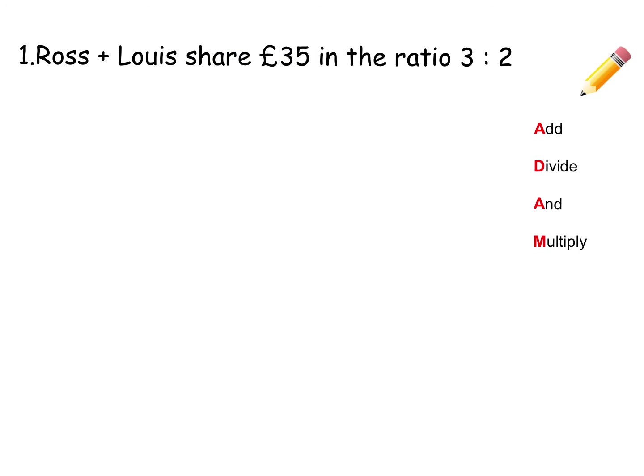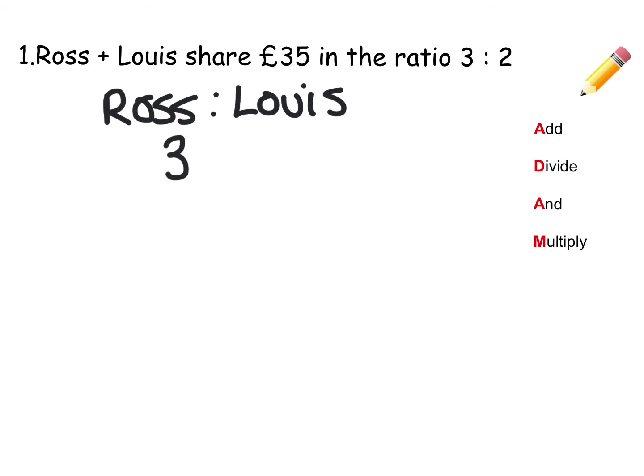Let's get going. These questions are looking at when we're sharing money or chocolate or working out the ratio of seats at a cinema that are unequal. To make it simple, we start with money: we're going to share £35 between Ross and Louie in the ratio 3 to 2. Ross is going to get three shares compared to Louie's two shares. I'm just going to first of all always write this out as a ratio — Ross to Louie, the ratio is 3 to 2.